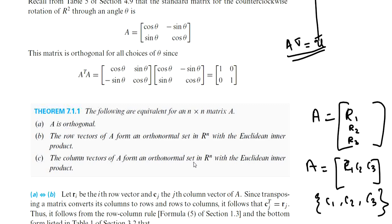In terms of the column vectors: if we take the dot product of different column vectors, the result will be 0 — they will be orthogonal — and also the norm of each vector will be 1, making them an orthonormal set.